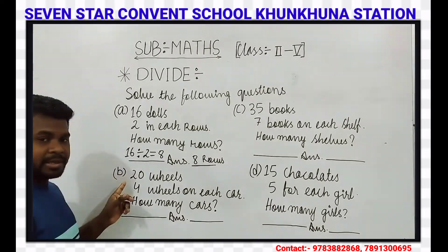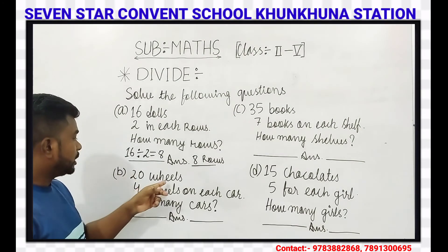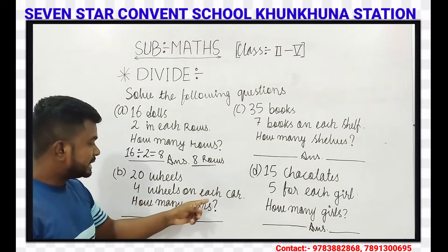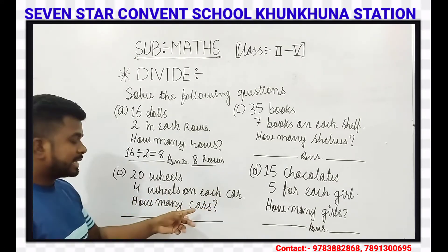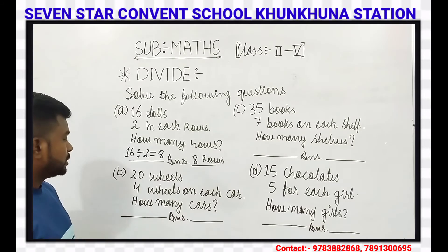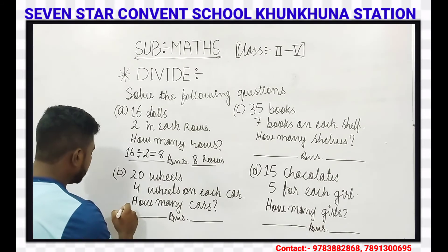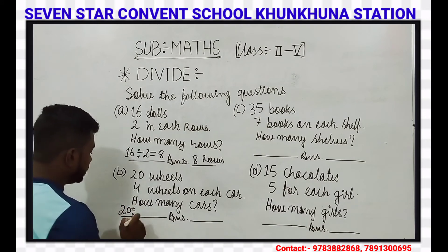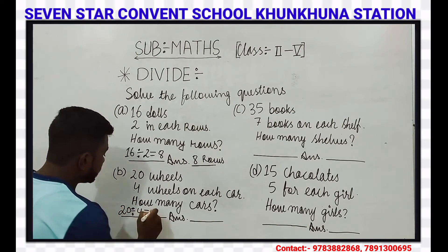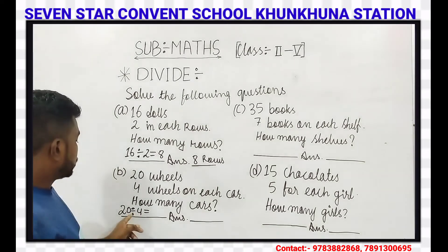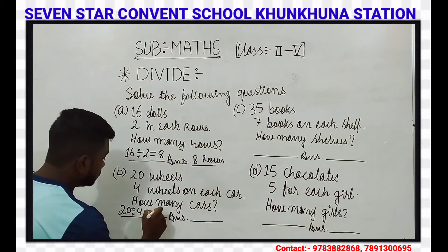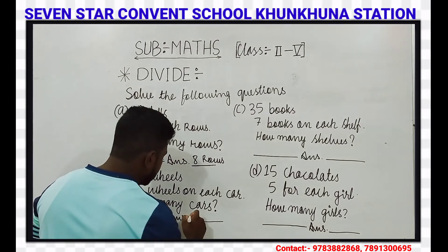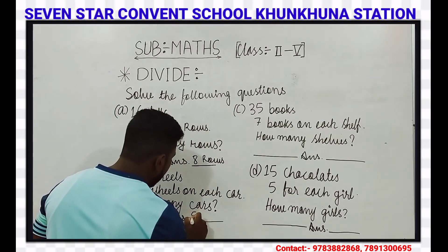In number B, we have 20 wheels, 4 wheels on each car. How many cars? We have to divide — it is very simple. We write here: 20 divided by 4 is equal to 5. That means the answer is 5 cars.